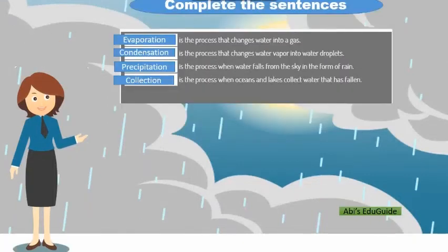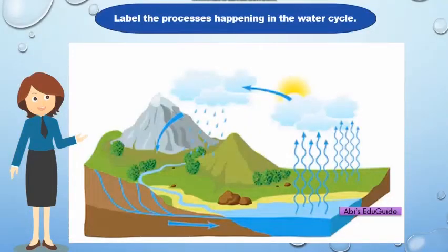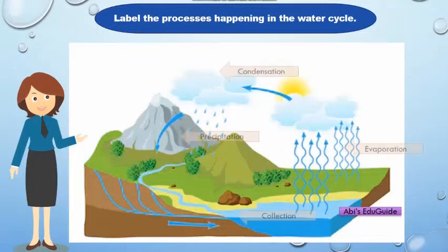Check your answers. Evaporation is the process that turns water into gas. Condensation is the process that changes water vapor into water droplets. Precipitation is the process when water falls from the sky in the form of rain. Collection is the process when oceans and lakes collect water that has fallen. Now for this activity, you can do it in your notebook: label the processes happening in the water cycle — evaporation, condensation, precipitation, and collection. These are the main processes in the water cycle.